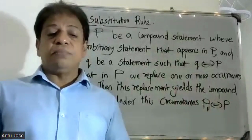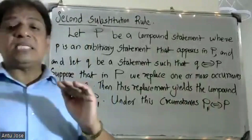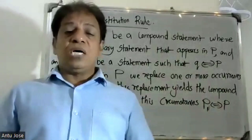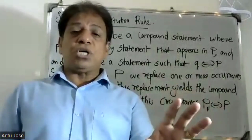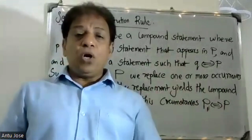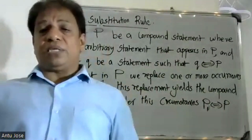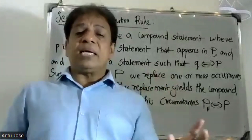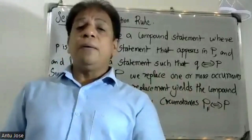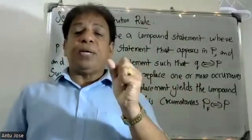That satisfies the right condition for the Second Substitution Rule. In the First Substitution Rule, the compound statement is the tautology. The tautology is the tautology — that is, small p. That statement is equal to the statement q, which was the tautology.